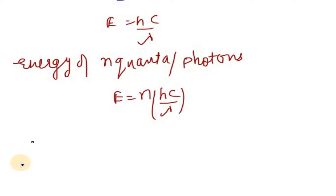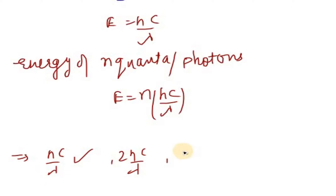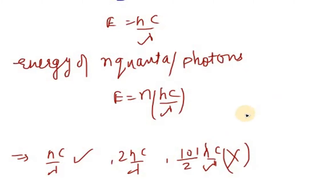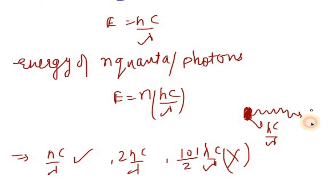The possible energies for light are HC/λ, 2HC/λ, and so on — but 1/2 HC/λ is not possible. The smallest unit of energy of electromagnetic radiation is HC/λ, so the energy cannot be zero, half, or 0.75 — it must always be an integral multiple of HC/λ. Energy cannot be fractional.